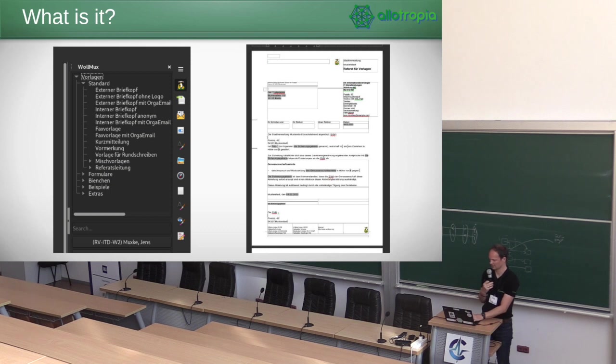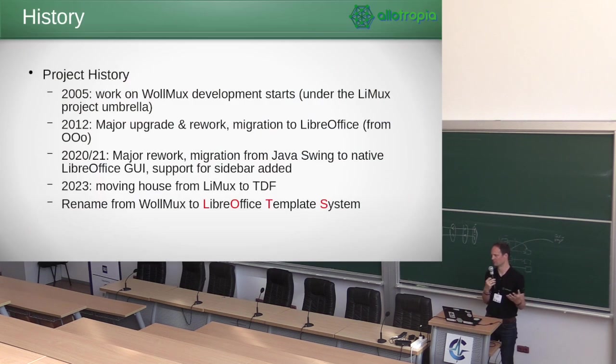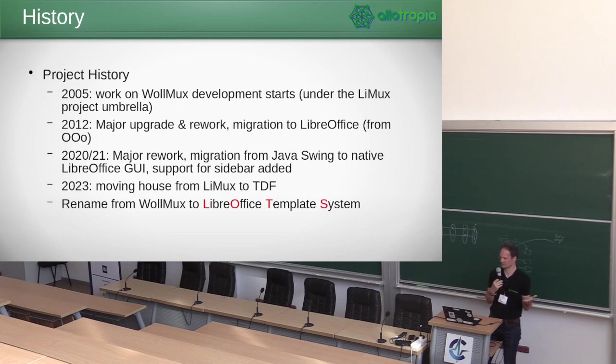What you see here is the sidebar — the custom sidebar of Wollmux when you install it on the left-hand side, and on the right-hand side the result of such a template run. So this is a letter with data filled and multi-page. That's the product — essentially it is for producing very complex, mostly government, but not exclusive to government, very complex forms.